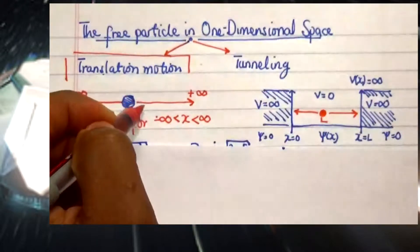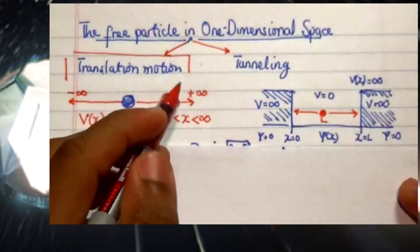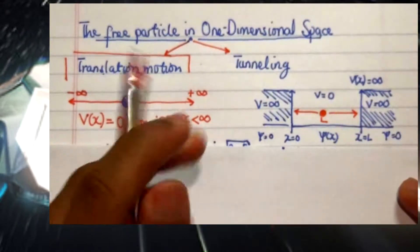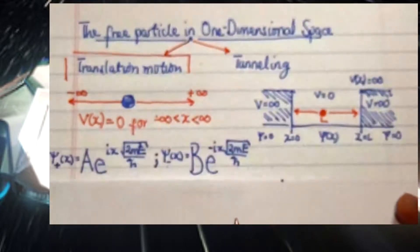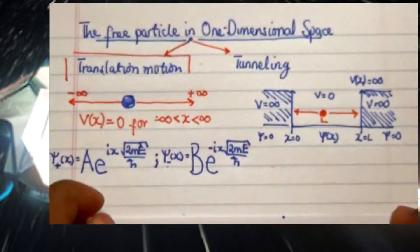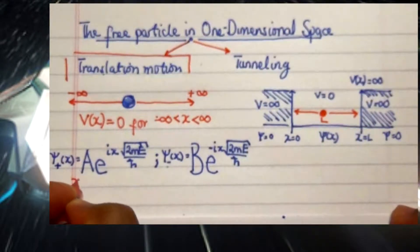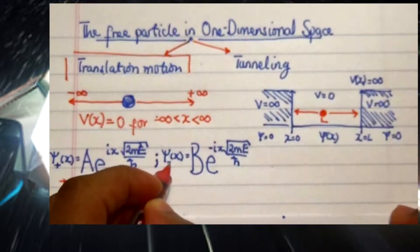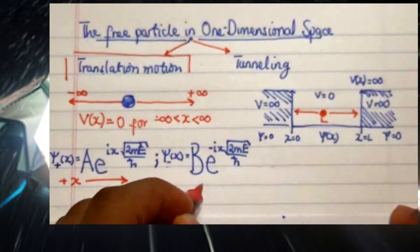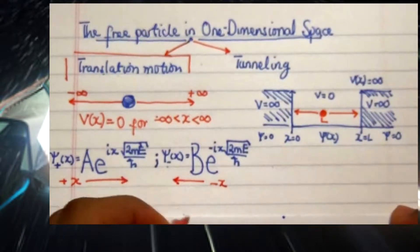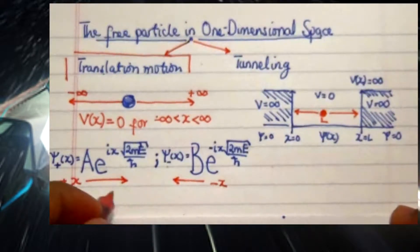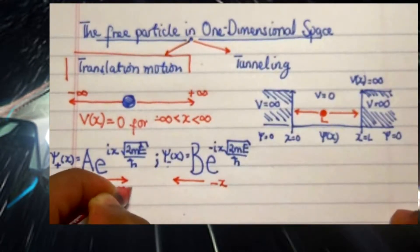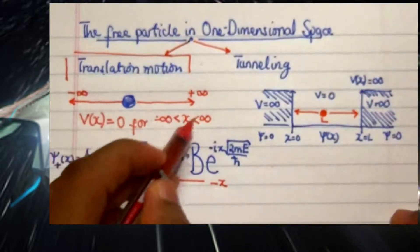To solve Schrödinger's equation for this problem, we need to consider particle movement in the x direction. For example, if the particle is moving in the positive x direction, it is expressed by one wave function formula. For the negative x direction, the wave function is expressed with negative x, and the particle moves in the opposite direction. Both directions share the same boundary region, from negative infinity to positive infinity.